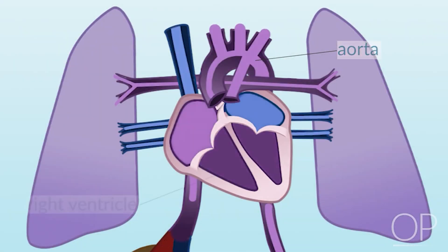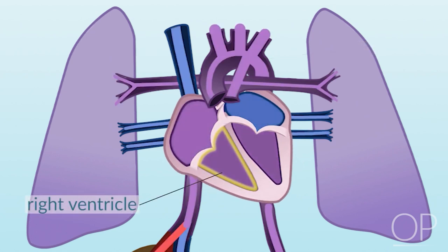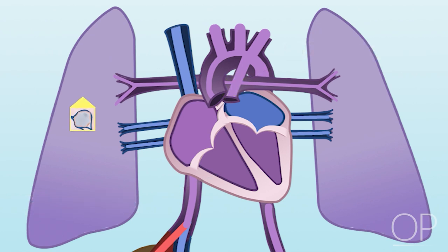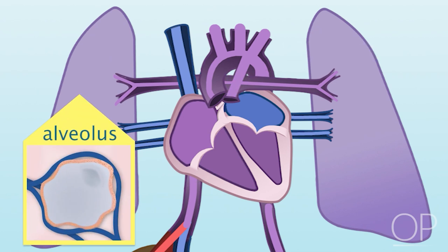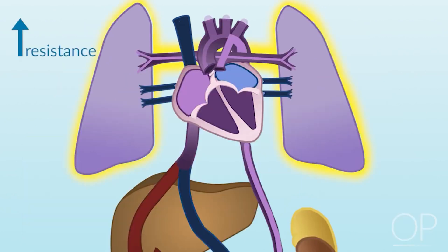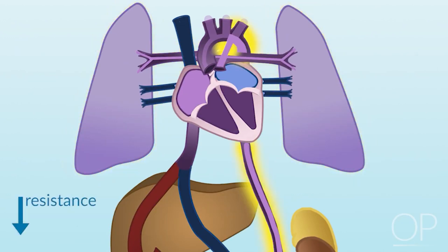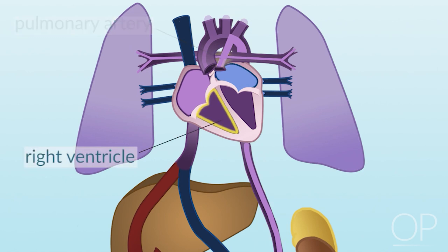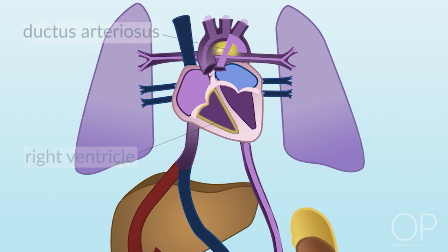Blood that flows into the right ventricle is then pumped into the pulmonary artery. Because the lungs are fluid-filled instead of air-filled, the vessels in the lungs are narrow, creating higher resistance to blood flow into the lungs. Due to this high resistance to blood flow in the pulmonary circulation and the low resistance to blood flow in the systemic circulation, blood pumped into the pulmonary artery by the right ventricle is more likely to flow into the ductus arteriosus and then into the aorta.